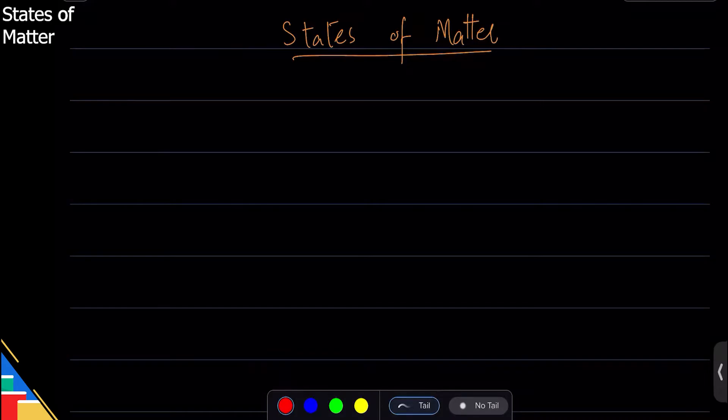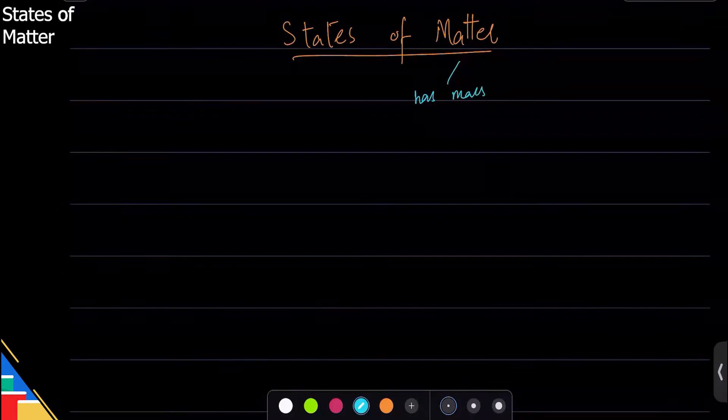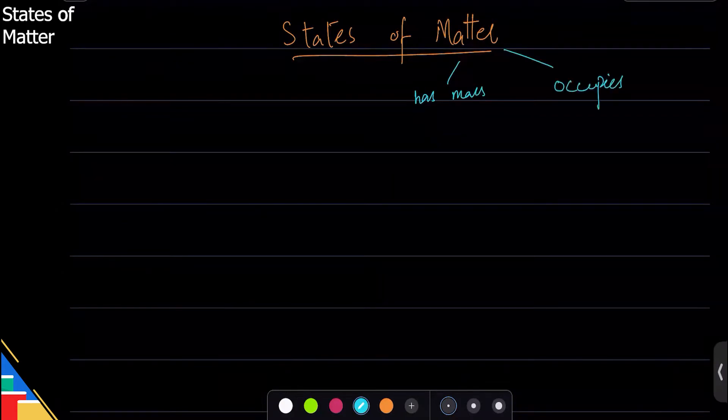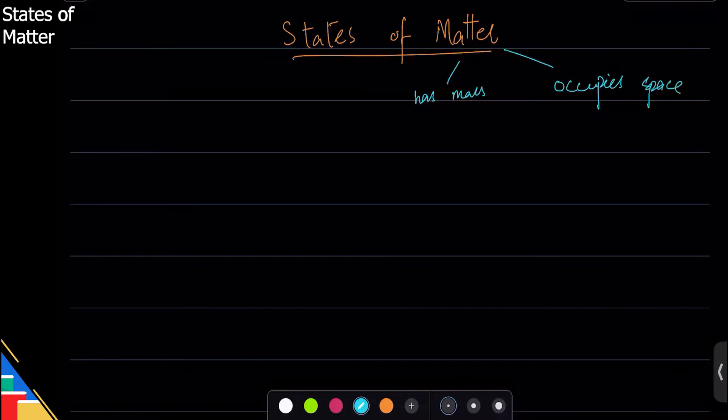What is matter? Matter is pretty much anything that you will interact with in your life. Matter is anything that has mass and occupies space. These are two important things that make matter what it is.